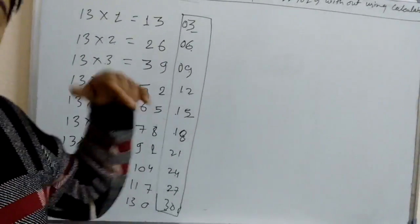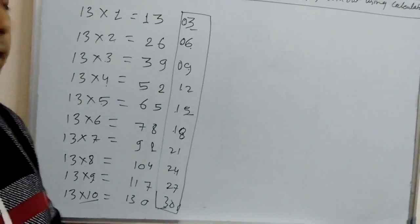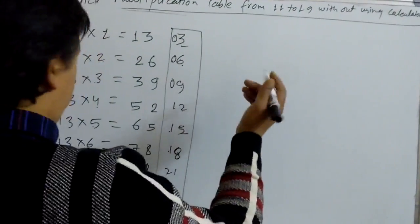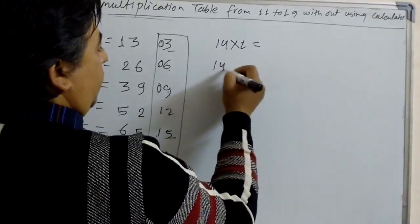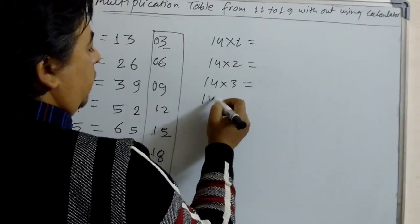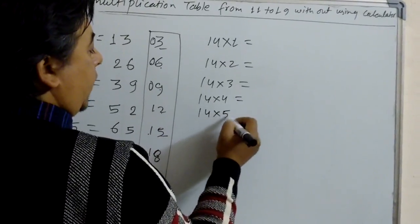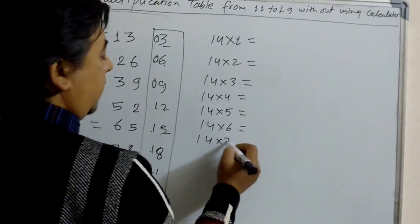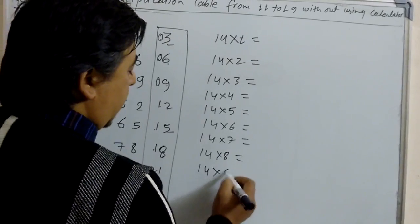The same method can be applied to the 14 table also. Now we will learn the table of 14: 14×1, 14×2, 14×3, 14×4, 14×5, 14×6, 14×7, 14×8, 14×9, 14×10.